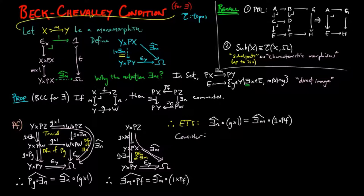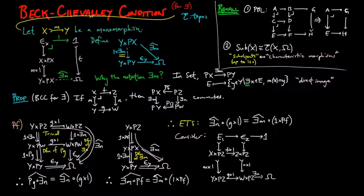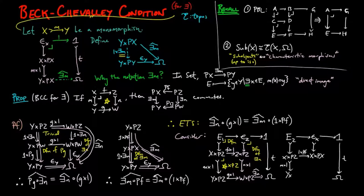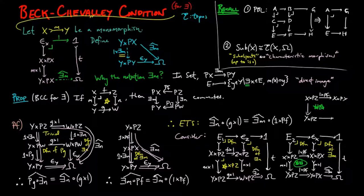So we construct the subobjects classified by each. Consider the following diagram where the right rectangle is a pullback by definition of ∃m, the top left is a pullback by definition, and the bottom left is a pullback because it is a product of a pullback.